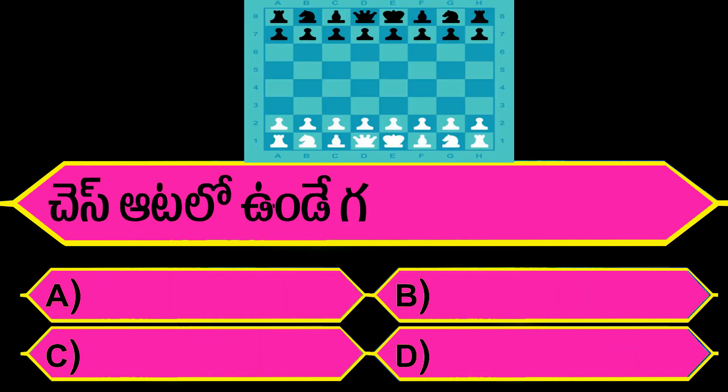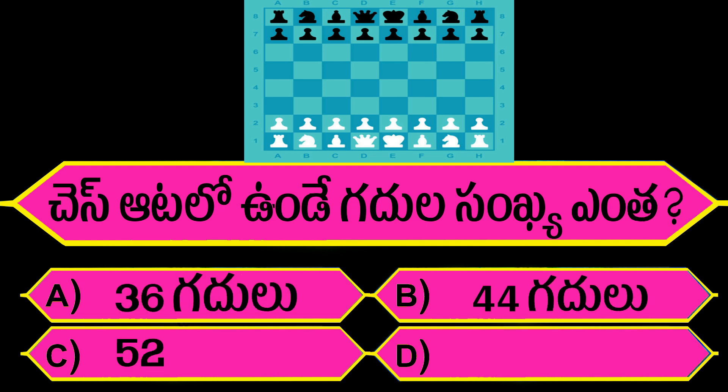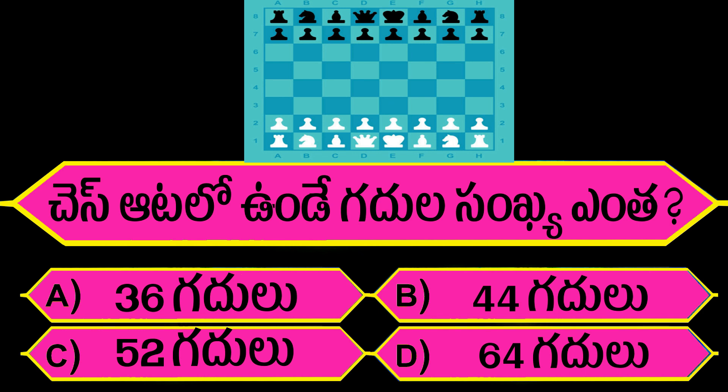Chess art ala uunday gadulu sengke anta. Option A: 31 gadulu. Option B: 44 gadulu. Option C: 72 gadulu. Option D: 64 gadulu.